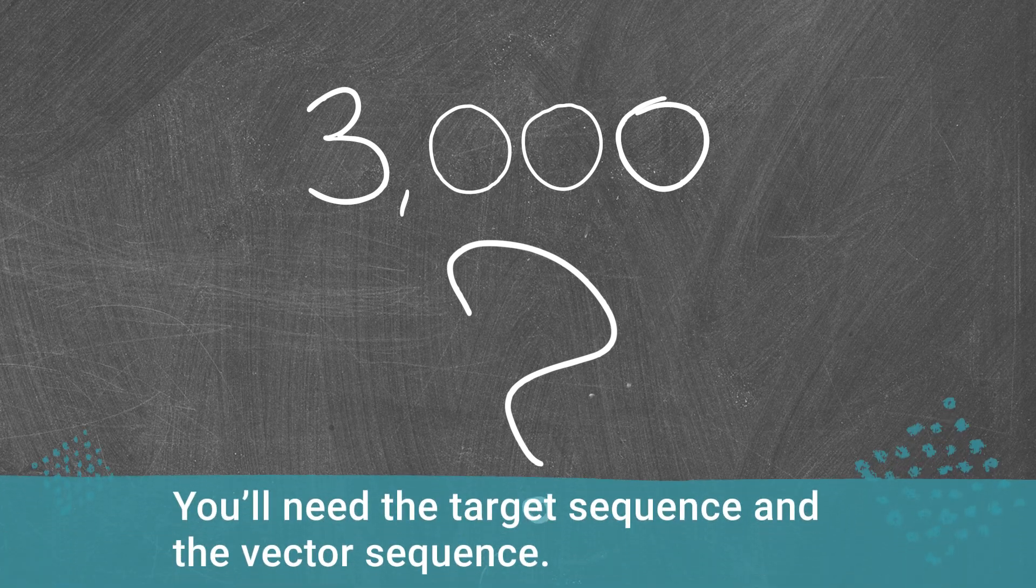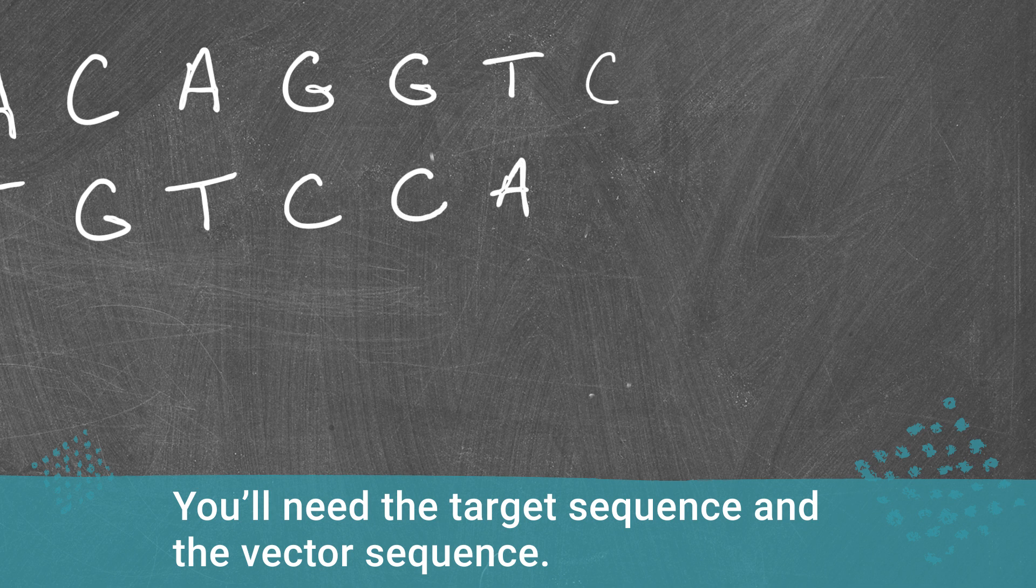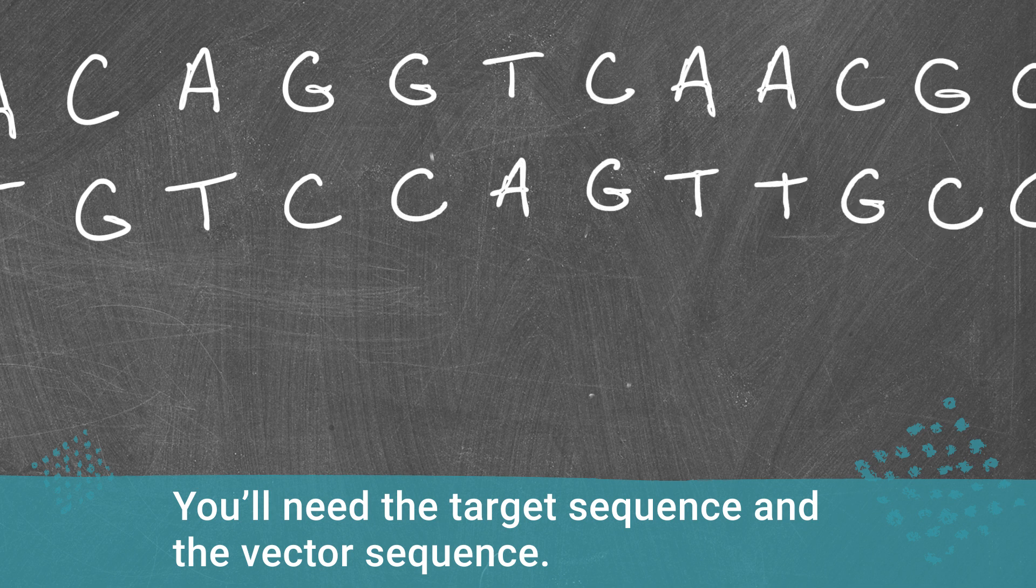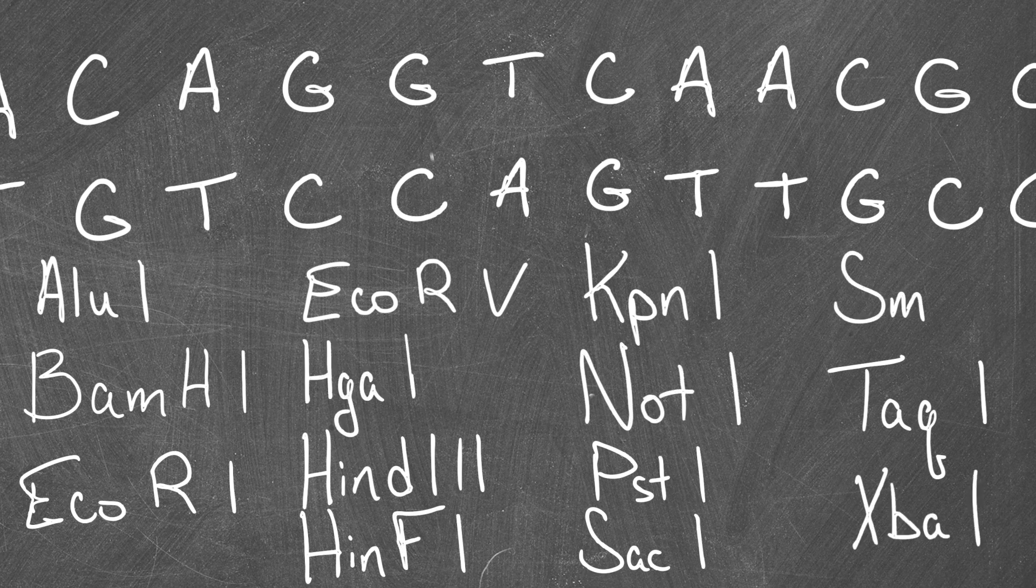To figure this out, you'll need the sequence of your target and the sequence of the vector you'd like to put it into. And, of course, a reference list of the enzymes available to you.